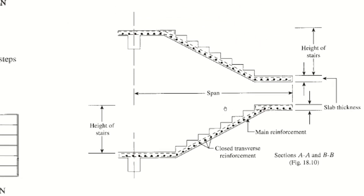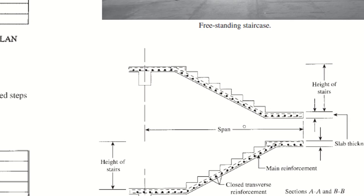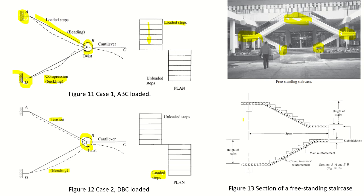The reinforcement details for freestanding stairs include simply-supported-type reinforcement in the staircase portions and both negative and positive reinforcement in the cantilever slab portion.